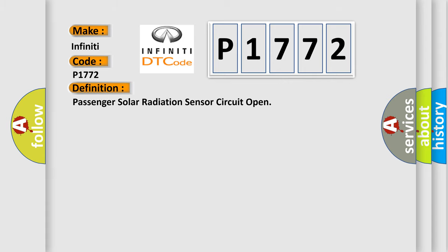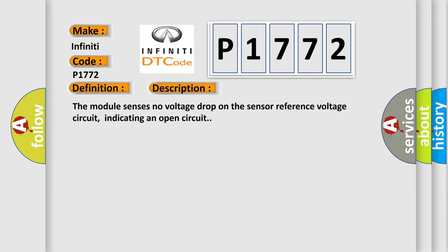The basic definition is Passenger solar radiation sensor circuit open. And now this is a short description of this DTC code: The module senses no voltage drop on the sensor reference voltage circuit, indicating an open circuit.